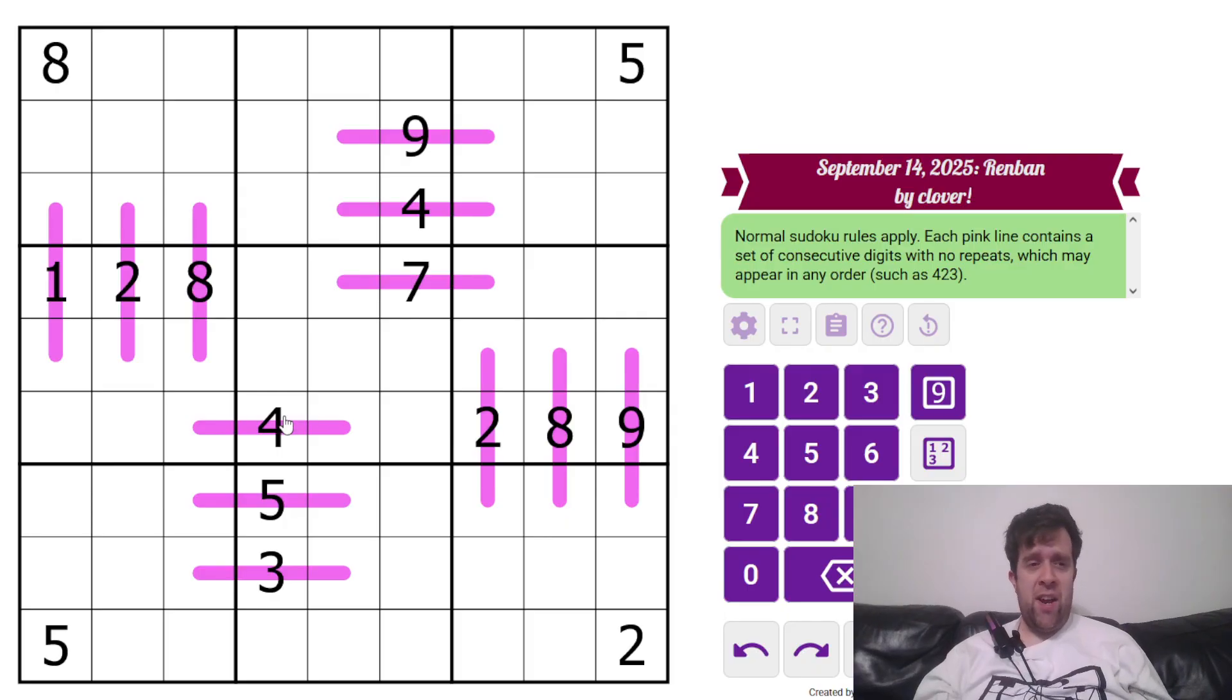This is a Ren Ban Sudoku. What is a Ren Ban Sudoku? Normal Sudoku rules play each box, each row, and each column must contain one to nine once each. Now, these purple lines are Ren Ban.